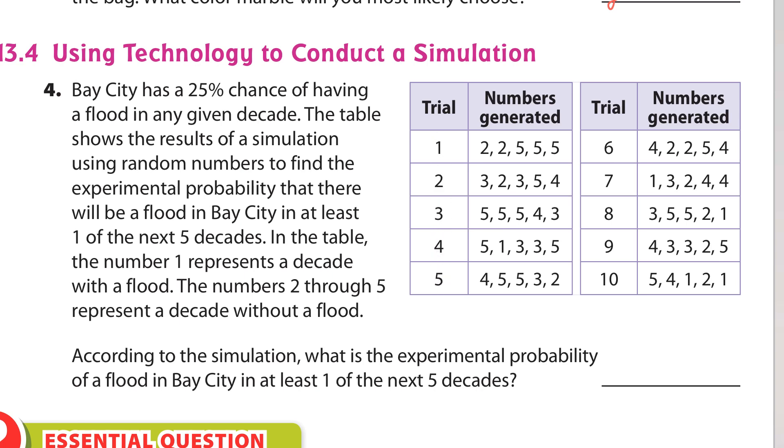So these are the one in the next five decades. In the table, the number one represents a decade with a flood. So this represents a decade with a flood, decade with a flood, decade with a flood, and decade with a flood. Numbers two through five, no flood. According to the simulation, what is the experimental probability of a flood in Bay City in at least one of the next five decades?